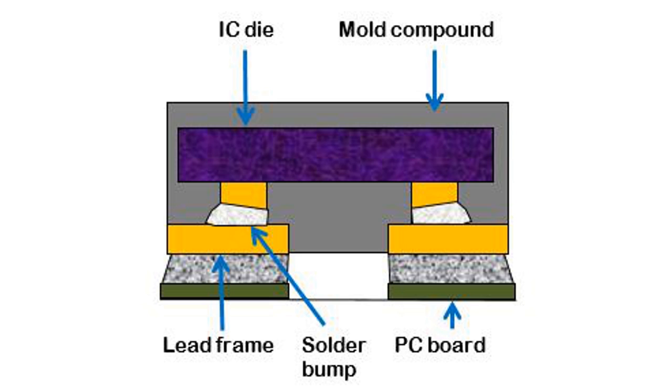Solder bumps are placed on the IC die, the die is then flipped and attached to the lead frame. The figure shows a package cross section.